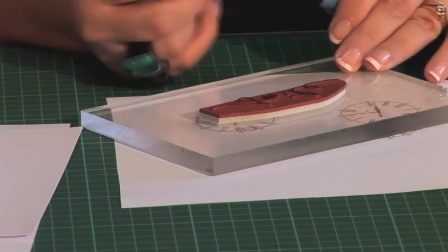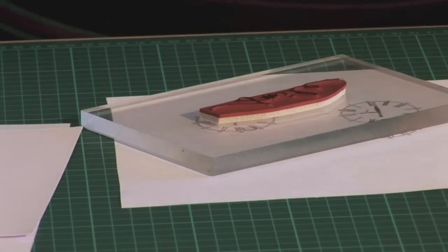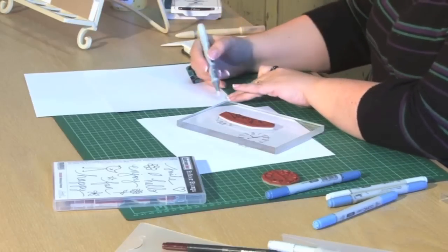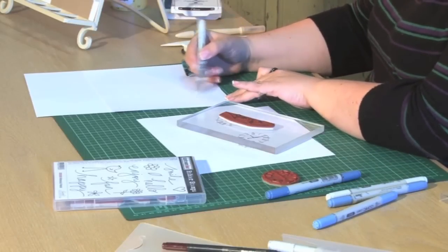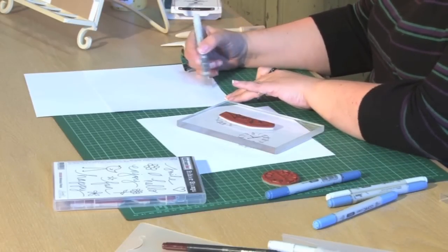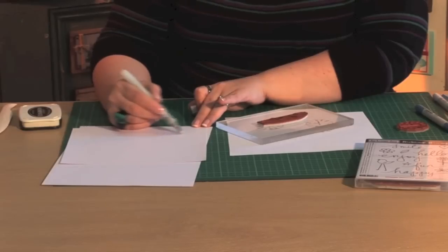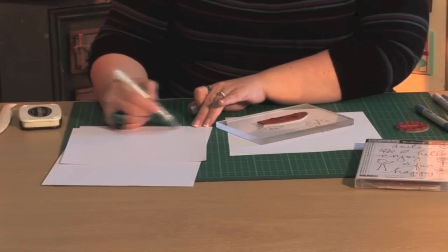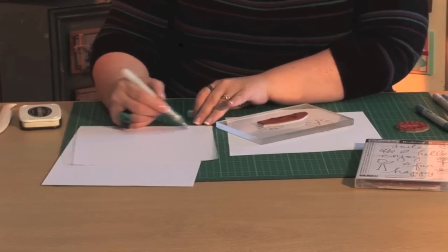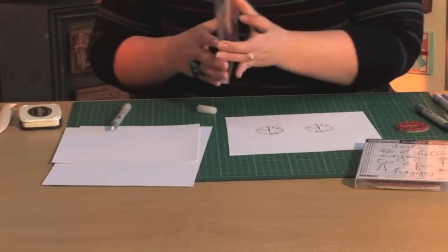You need your zero colorless blender on your Express It cardstock and what you're going to do is color, prime up the paper in your zero colorless blender in the area that your stamp is going to take. And you need to work a bit quickly.